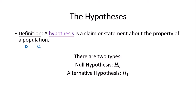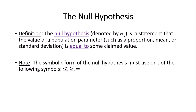There are two types of hypotheses: the null hypothesis and the alternative hypothesis. Every single hypothesis test will have a null and an alternative. The null hypothesis, denoted by H-naught or H0, is a statement that the value of a population parameter — such as a proportion or mean — is equal to some claimed value. The null hypothesis always includes equality; equality can only go to the null hypothesis. The symbolic form of the null hypothesis must use one of the following symbols: less than or equal to, greater than or equal to, or just equal to. These are the only three symbols possible when writing the null hypothesis.